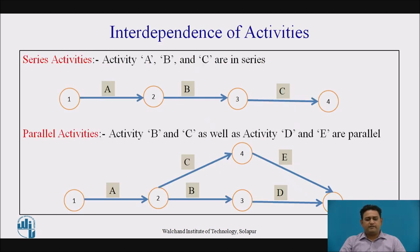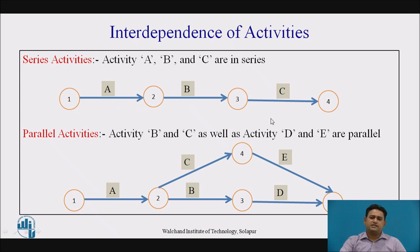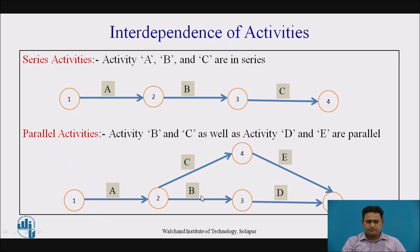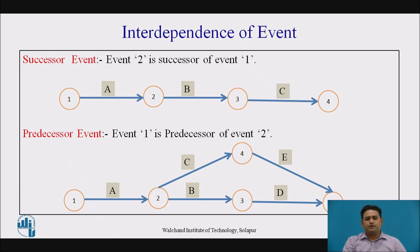Now the interdependency of activities. There are series activities and parallel activities. Here in this network diagram, A, B, and C are series activities. This means B is going to start only after the completion of activity A, and C is going to start only after the completion of activity B — these are in series. Parallel activities are activities which start simultaneously or are parallel to each other. In this network, C and B are parallel activities because they start at the same time, and D and E also run simultaneously.